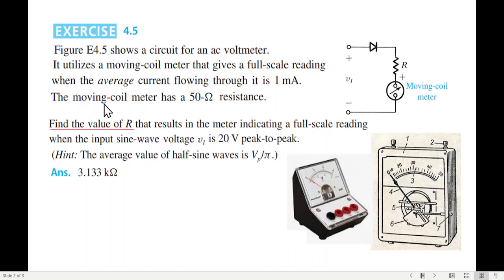The moving coil meter has a 50 ohm resistance. So it is a meter resistance, 50 ohm. The circuit system has a series resistance to limit current.